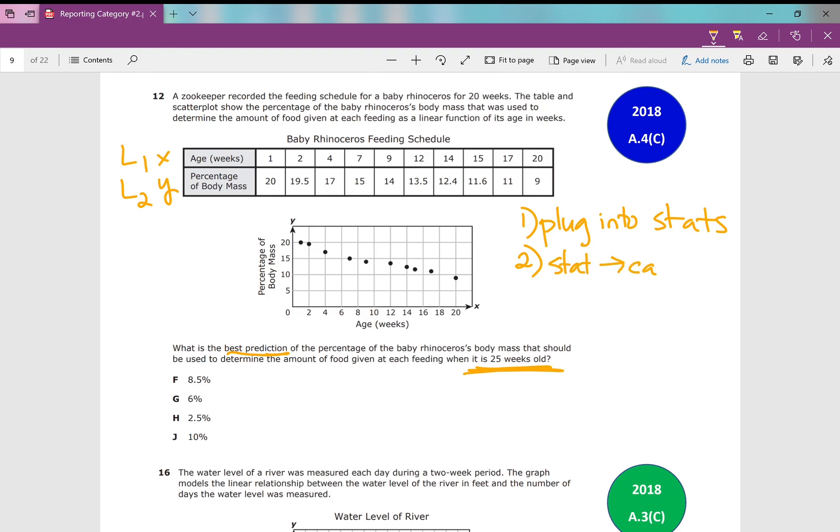Stat, edit. Stat, enter, plug in all your values for L1, all your values for L2, make sure you have the same amount for each. Then we're going to perform a linear regression. Stats, scroll over to calc, go down to linreg, linear regression, ax plus b. Enter, enter, enter, all the way until your equation shows up. You get negative 0.5448x plus 19.803. So I get my equation. After I perform my linear regression, I get my equation. And whenever we make a prediction, that regression equation is what I use to make my prediction.